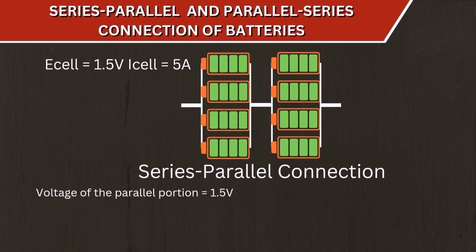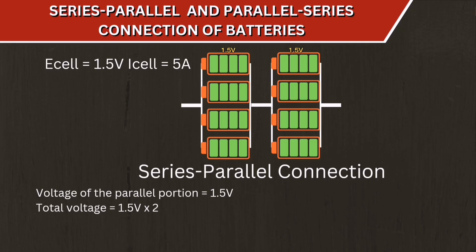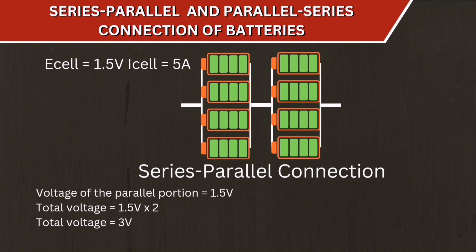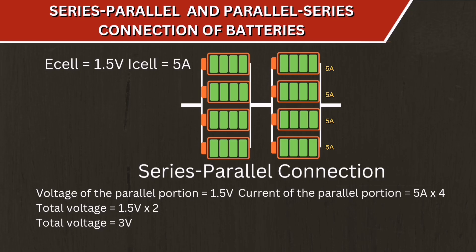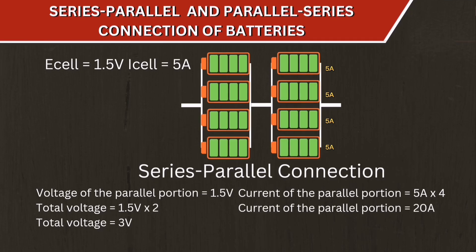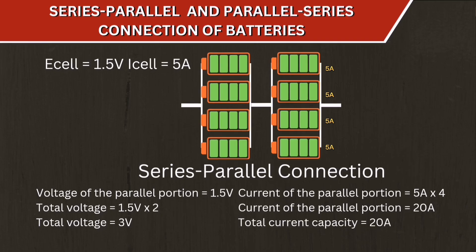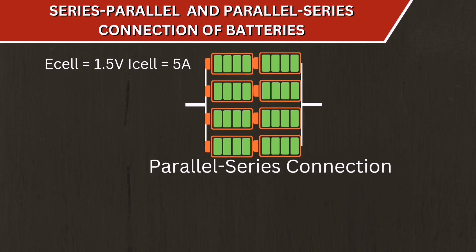The next connection is series-parallel. Based on the diagram, the voltage of the parallel portion is 1.5 volts; since there are two identical parallel groups connected in series, the total voltage is 1.5 volts multiplied by 2, equal to 3 volts. For current, the parallel portion adds up: 5 amperes multiplied by 4 sources equals 20 amperes. Since the two identical parallel groups are in series, the current remains 20 amperes.